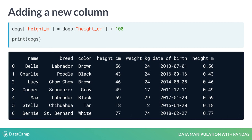Let's say we want to add a new column to our data frame that has each dog's height in meters instead of centimeters. On the left-hand side of the equals, we use square brackets with the name of the new column we want to create. On the right-hand side, we have the calculation. Notice that both the existing column and the new column we just created are in the data frame.